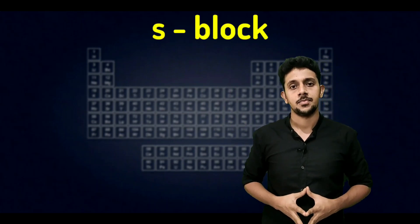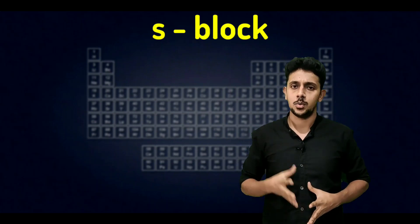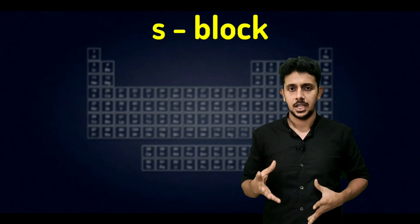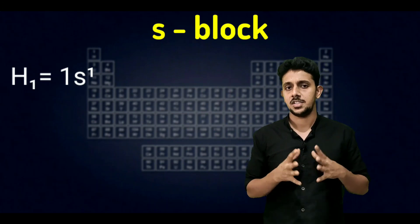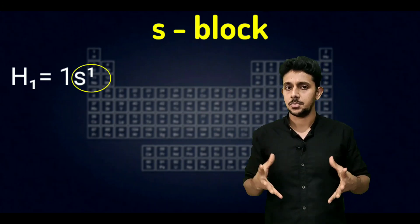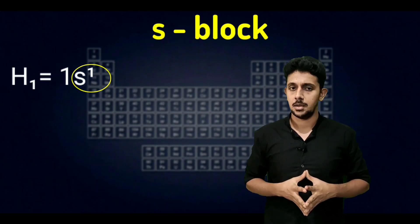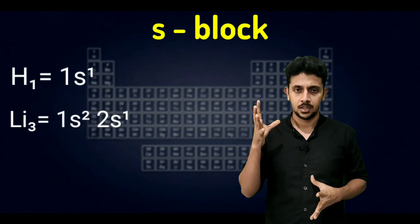Let's move to the first block of elements: the s-block. S-block elements are those in which the last electron is added to the s sub-shell. For example, hydrogen with atomic number one has configuration 1s1 — the last electron is added to the s sub-shell. Similarly, lithium with atomic number three has configuration 1s2 2s1 — the last electron is added to the s sub-shell.